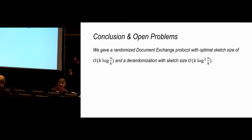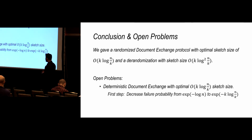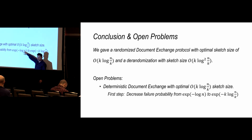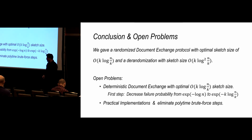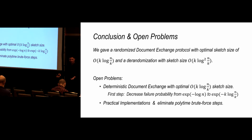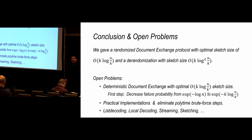In summary: we get an optimal randomized document exchange protocol with sketch size k log(n/k), along with a derandomization that also yields better error-correcting codes, losing a log(n/k) factor. The obvious open problem is whether we can make this deterministic — a good first step would be driving failure probability from polynomially small to exponentially small. The algorithms are elegant for the most part but have annoying brute-force polynomial-time steps at the end; eliminating those for practical implementations would be nice. This connects to error-correcting codes, list decoding, local decoding, and streaming and sketching.